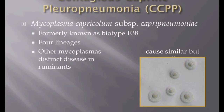Contagious Caprine Pleuropneumonia is caused by Mycoplasma Capricolum subspecies Capri pneumonia, which was formerly known as Mycoplasma biotype F38. There are four lineages which correspond to geographic regions. Mycoplasma Capri pneumonia belongs to a closely related group of mycoplasmas called the Mycoplasma mycoides cluster. Two other members — Mycoplasma mycoides subspecies Capri and Mycoplasma mycoides subspecies mycoides — large colony type, can cause disease in small ruminants that resembles Contagious Caprine Pleuropneumonia but may have extra-pulmonary signs and lesions.